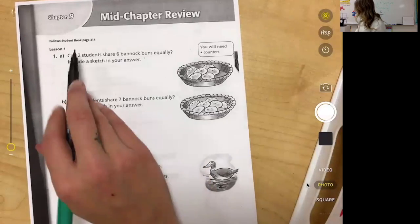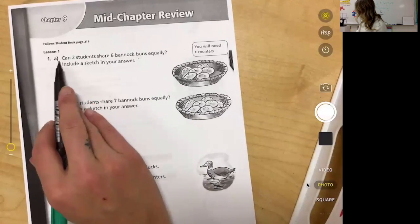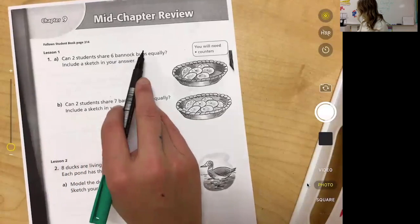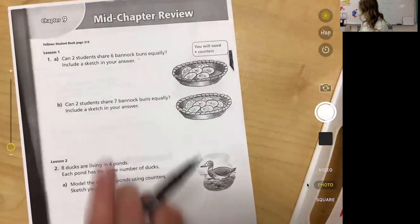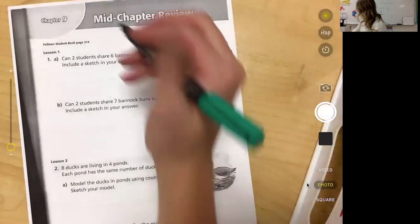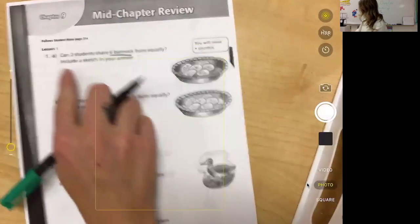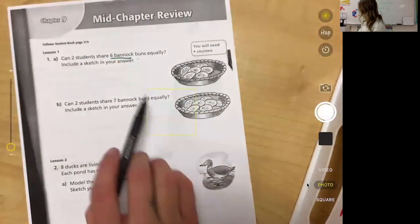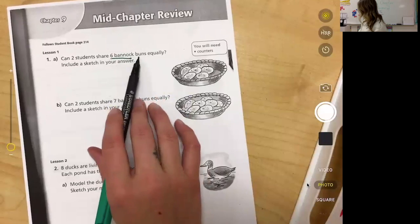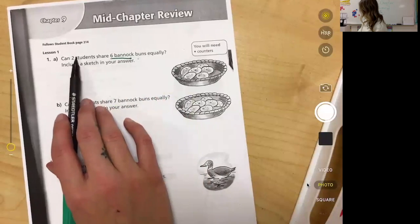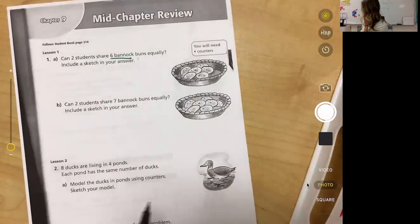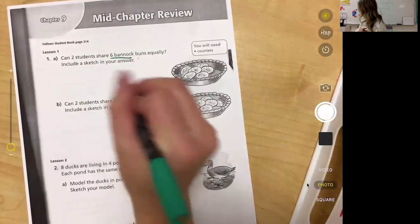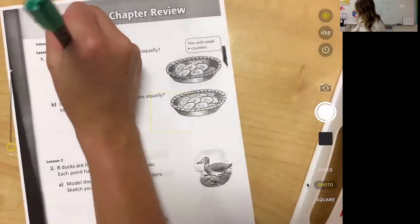Lesson one, number 1a says can two students share six banana chunks equally? Include a sketch in your answer. The first thing I would do would be to look for my big altogether number. The biggest number in this question is six, so six has to be my big altogether number. I'm going to draw my six banana chunks and figure out can two students share six banana chunks equally. You could draw the circle and then cross off each banana chunk as you put them into the groups.